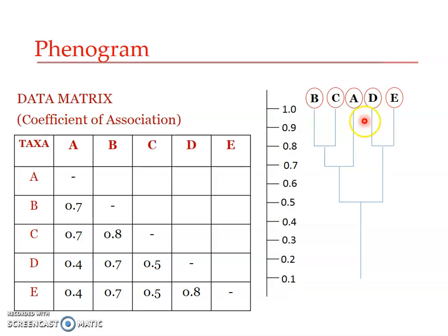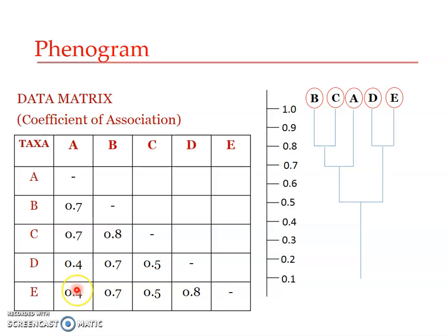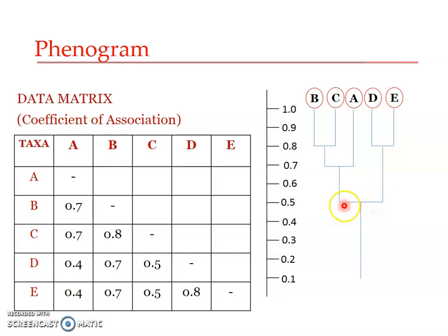Now we check the closeness between the ABC cluster and the DE cluster. We do not have an exact number, so we look at all cross-combinations: A-D, A-E, B-D, B-E, C-D, and C-E. We take the average of all these values, which comes to about 0.53. So we draw the connecting line at 0.53, meaning the two clusters share approximately 50% similarity.